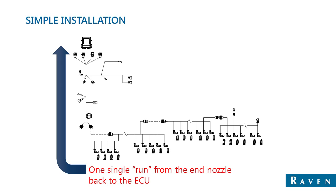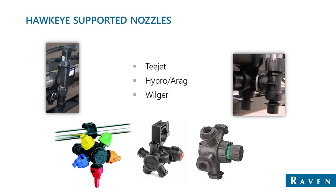Simple installation: the main Hawkeye ECU cable comes out to the bottom and you have a left and right main harness. There's one run from the center of the machine all the way out to the boom tips, and every nozzle is daisy chained along the way — no additional control modules needed as you go to the boom tip. The Hawkeye-supported nozzles work with the three main manufacturers — T-Jet, Hypro/A-Rag, and Wilger — so pretty much any system out there can have our nozzles attached to control accurately.